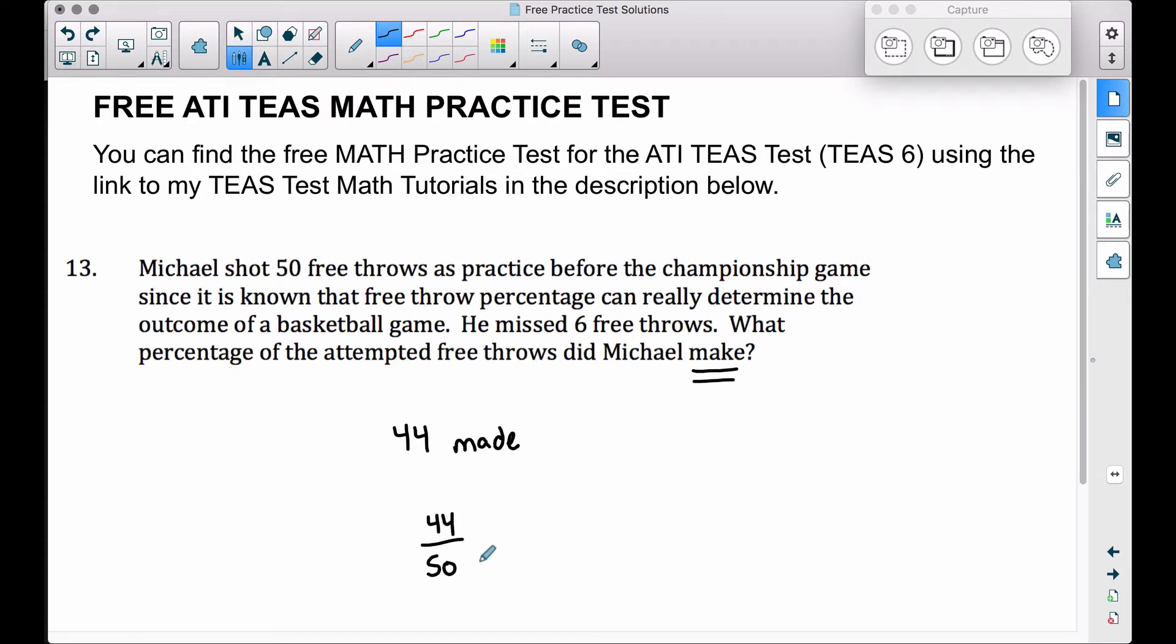The shortcut here is to divide these two numbers. 44 divided by 50 is going to give you 0.88. Now I'm going to go over a longer approach to this problem using proportions, but all we have to do here...